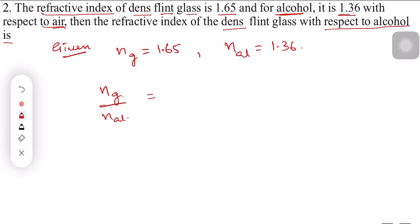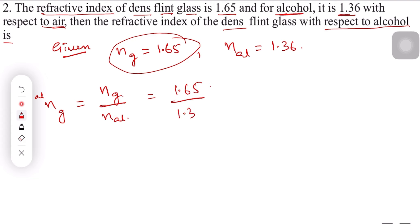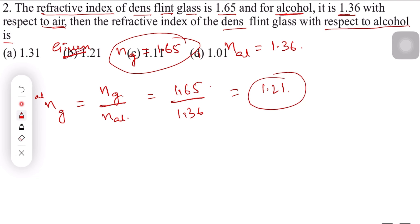We need to find n_glass relative to alcohol, which is ng divided by n_alcohol. That is 1.65 divided by 1.36. Dividing these gives approximately 1.21. Checking the answer, it is 1.21 — that is option B.